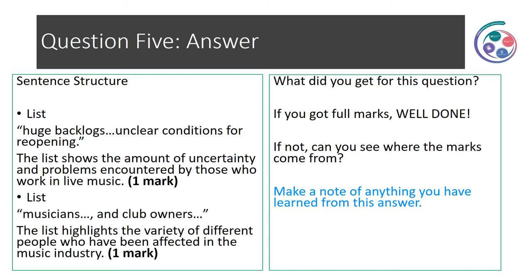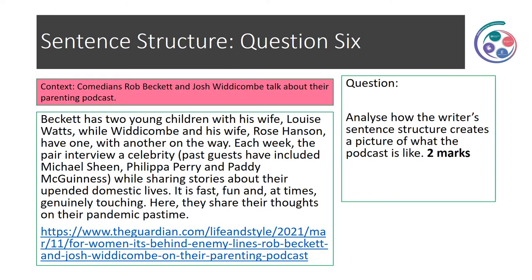You're doing really well, folks — just one more question to go. Question six. Context: Comedians Rob Beckett and Josh Widdicombe talk about their parenting podcast. Beckett has two young children with his wife, Louise Watts, while Widdicombe and his wife, Rose Hanson, have one with another on the way. Each week the pair interview a celebrity. Past guests have included Michael Sheen, Philippa Perry and Paddy McGuinness, while sharing stories about their upended domestic lives. It's fast, fun and at times genuinely touching. Analyse how the writer's sentence structure creates a picture of what the podcast is like. This is worth two marks, so pause the video for around three minutes and time yourself.